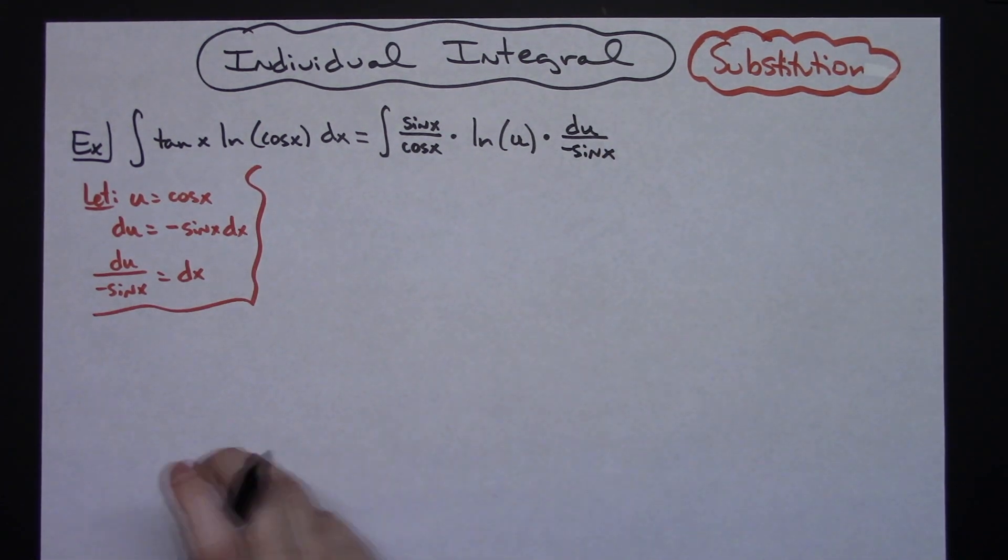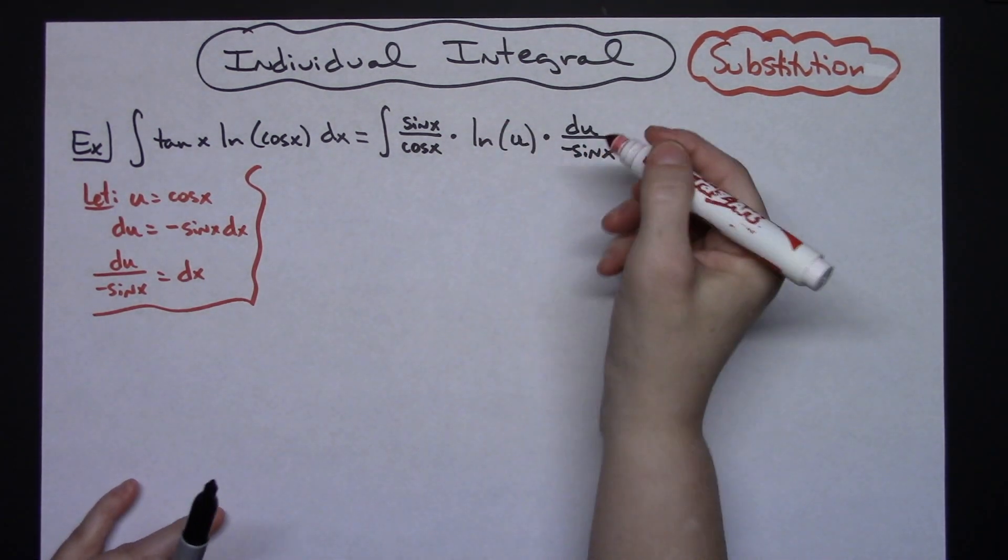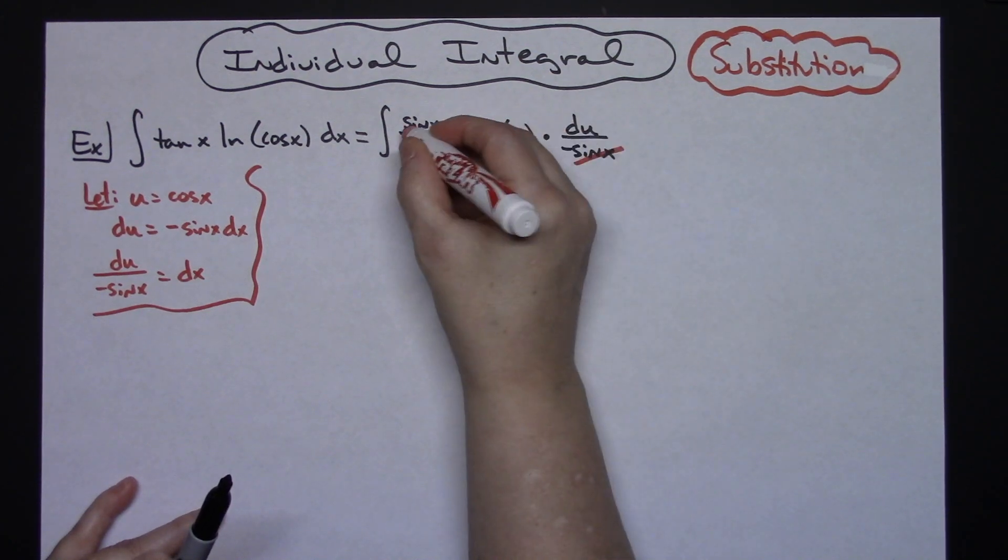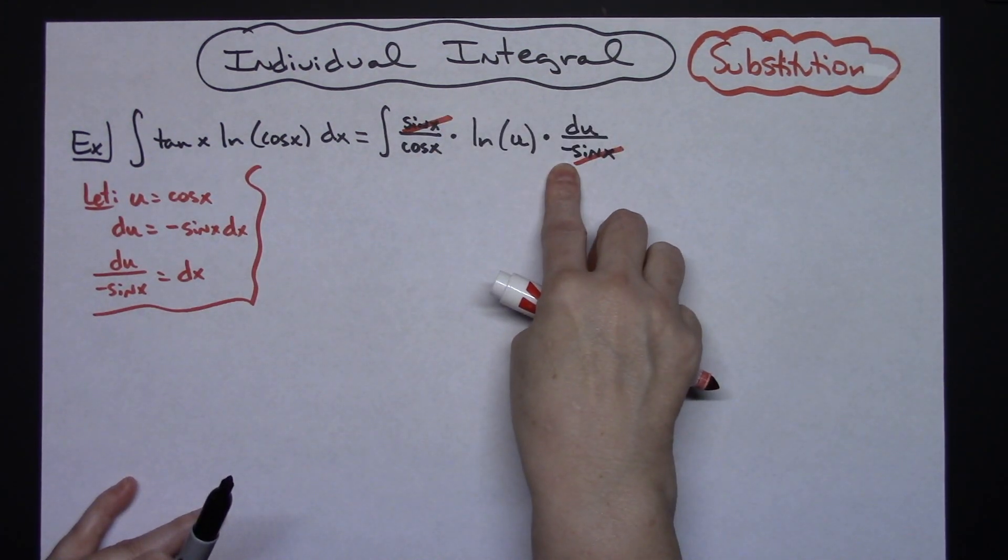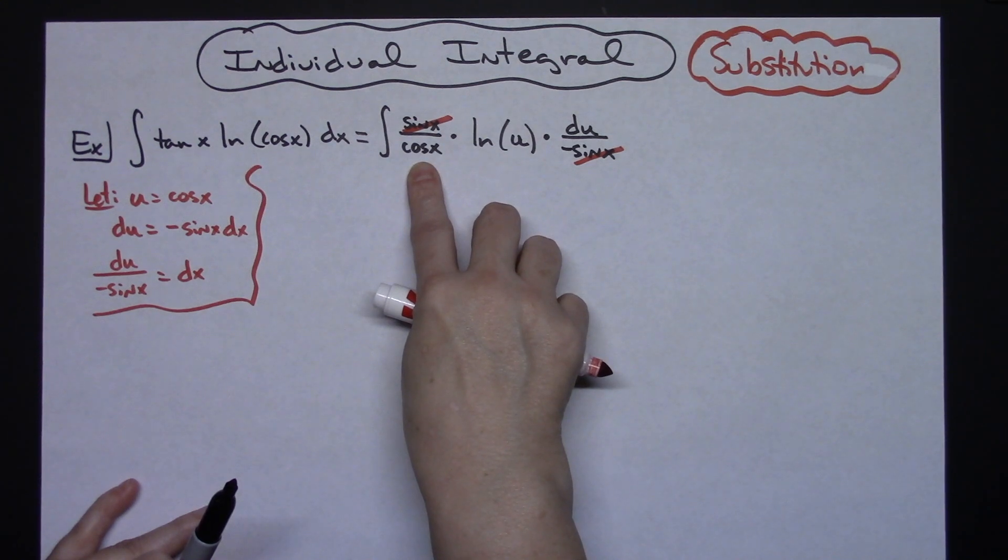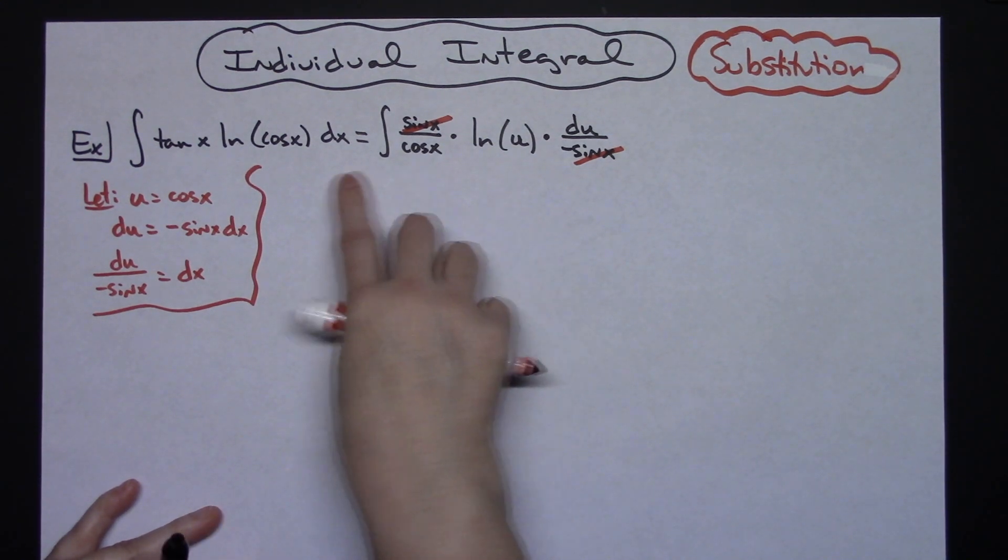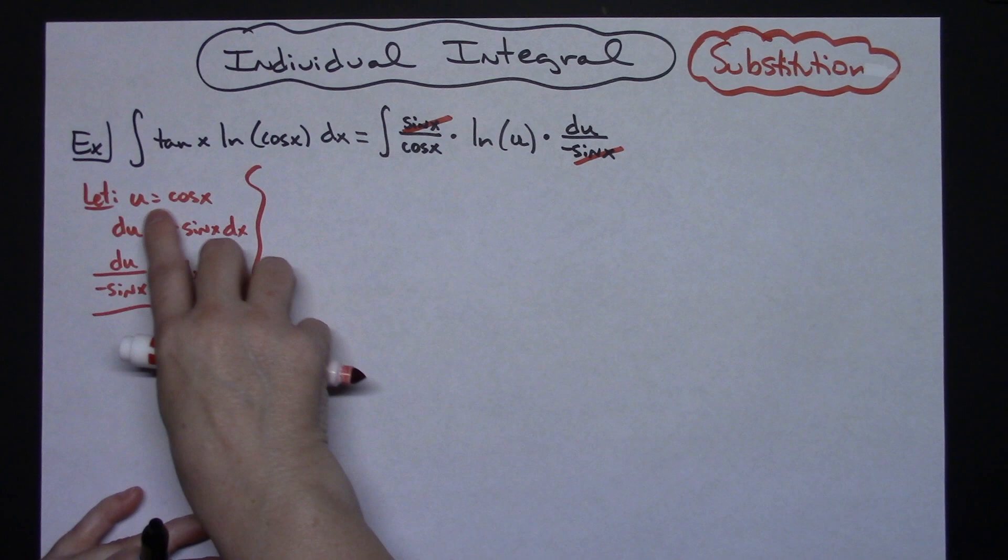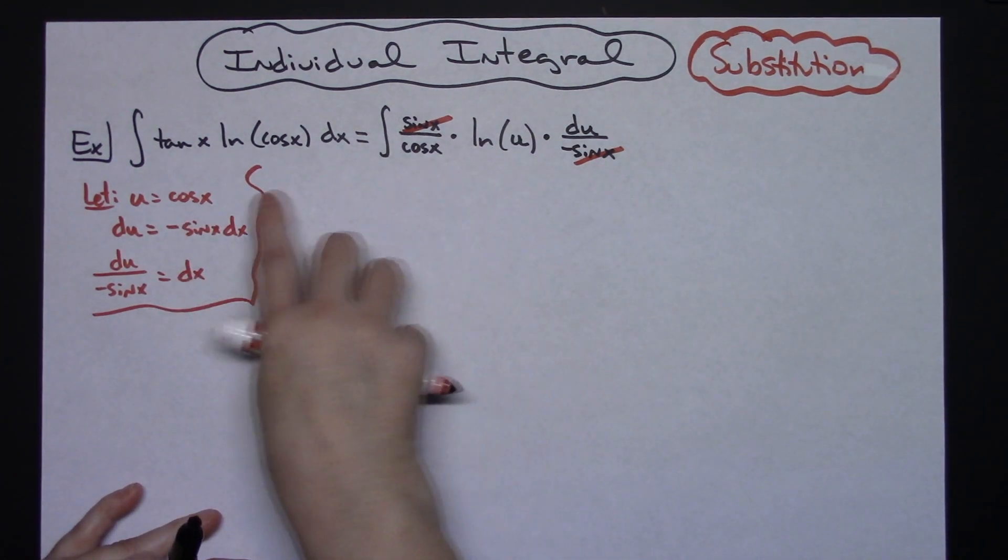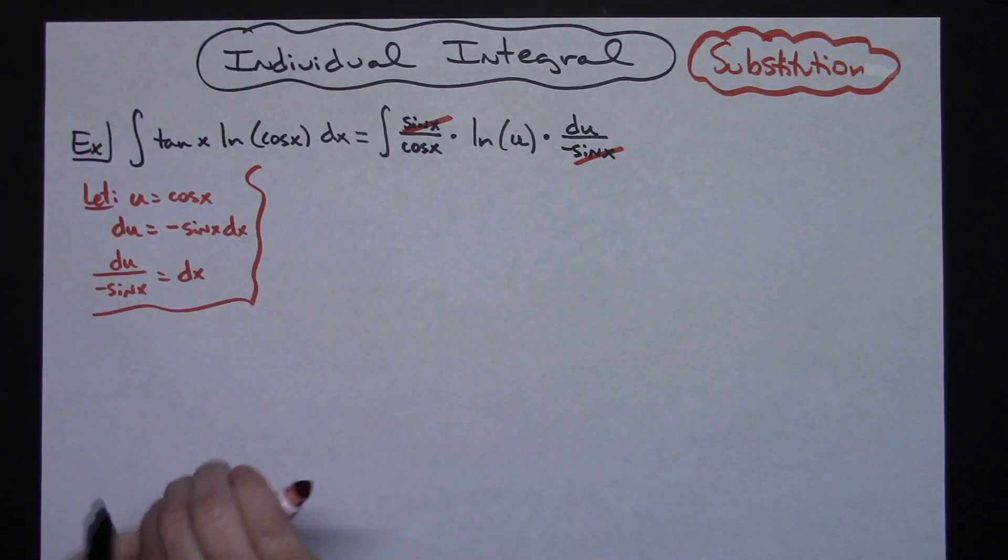Okay, now at this point, when you start working here, you can see that the sine x and the sine x is going to cross out, you're going to be able to pull out negative. Alright, I'm still going to have a cosine here, or a cosine x, but cosine x is u. I didn't replace it in that first step. Alright, so I can in the second one.